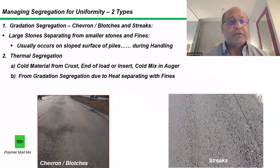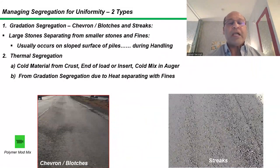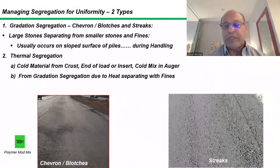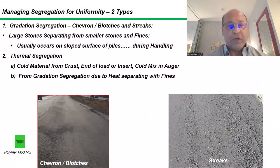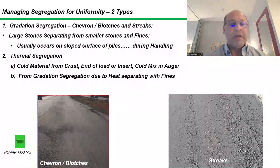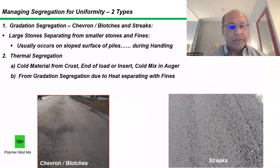Here we're looking at two types of segregation. We have gradation segregation where the larger stone separates from the smaller stone and fines, and that can only happen during handling when we create a slope surface or a pile. If we have gradation segregation, then we can also have thermal segregation because the heat is usually in the fines. In every location where you see a blemish, there are less fines, so that will also be referred to as thermal segregation. We can also have thermal segregation if we don't tarp the material properly or we sit too long — but not all mixes segregate. Also, if you use the proper insert, you can minimize segregation by reducing the slope phase on the pile.